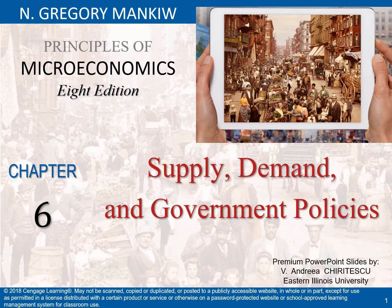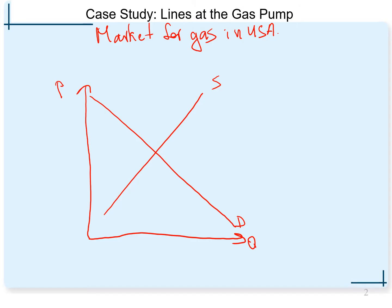So guys, we continue to study Chapter 6, Supply, Demand, and Government Policies, and in this video we're going to look at the policy of price ceiling by looking at the case study: lines at the gas pump.